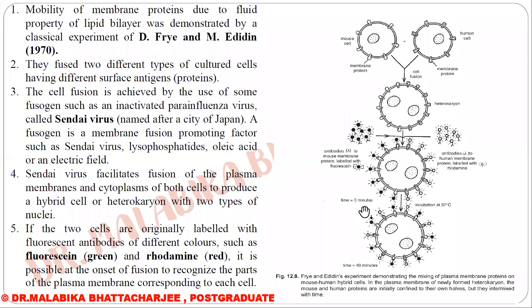At time zero, red color was seen on the human side and green on the mouse side. The cells were placed in culture and incubated at 37 degrees centigrade. After 40 minutes, when the same cells were observed under the microscope, there was no distinct green on one side and no distinct red on one side — rather there was a mixture of colors throughout. This proved that the proteins had moved, and now there was an admixture of color throughout the cell. This experiment proved that, just like lipid molecules show lateral movement, protein molecules can also show lateral movement through the lipid bilayer.